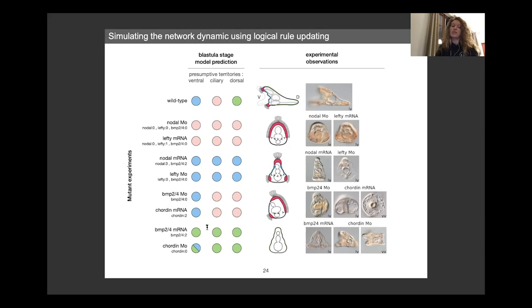except in one case, which is the ventral territory in chordin morpholino conditions, meaning that chordin expression is knocked down. In experimental observation, we expect to have a fully dorsalized embryo, so a dorsal expression pattern in the ventral territory. But in our case, we can see that the model predicts both states to be possibly reachable in this condition.